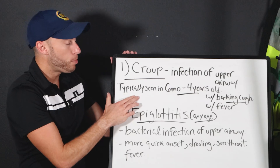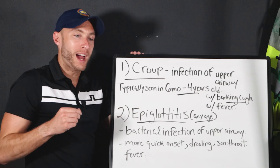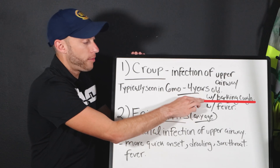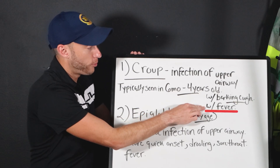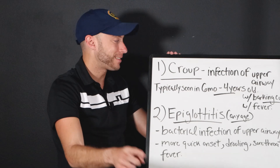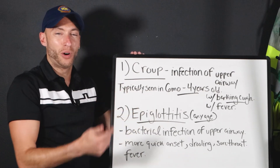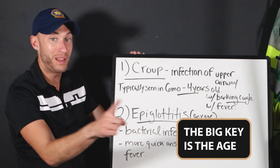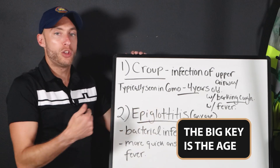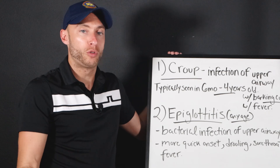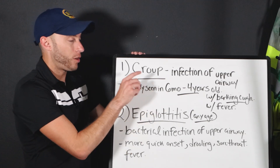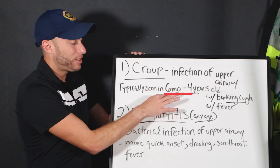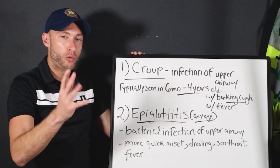Croup is more gradual. You'll hear a barking cough and see a gradual fever. Patients with croup don't typically drool as much — there's more drooling with epiglottitis. The big key is age: you don't have an adult patient with croup. Pediatrics get croup, typically from around six months to four years of age.